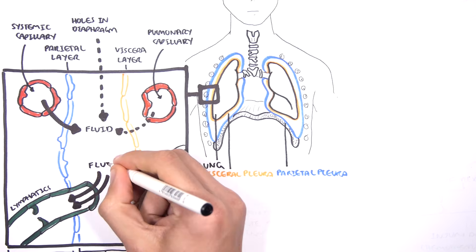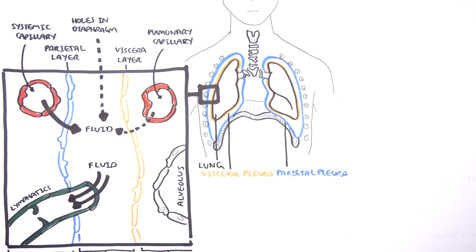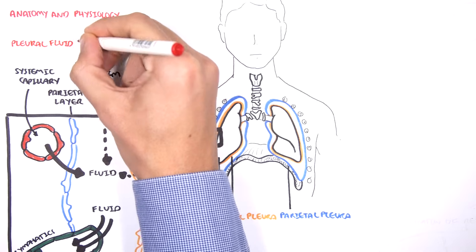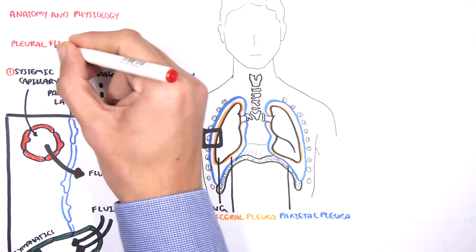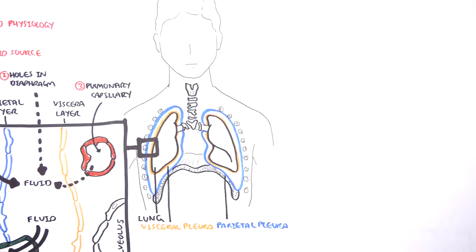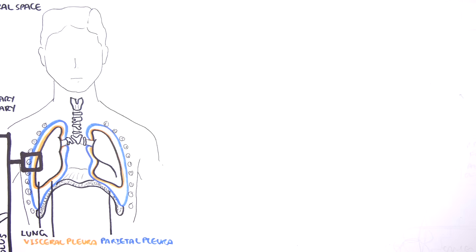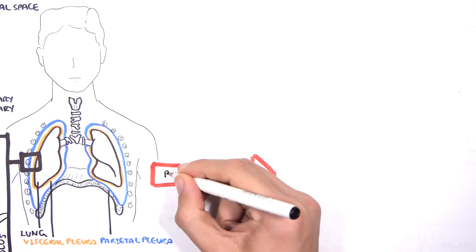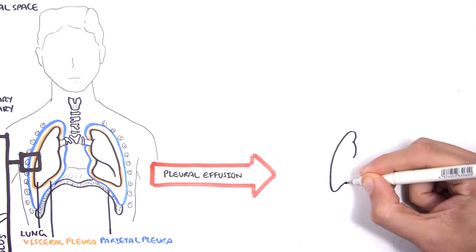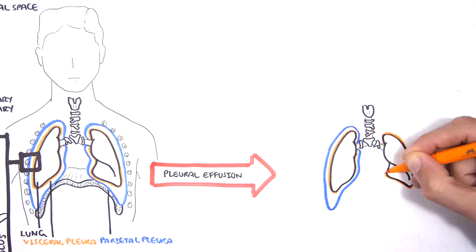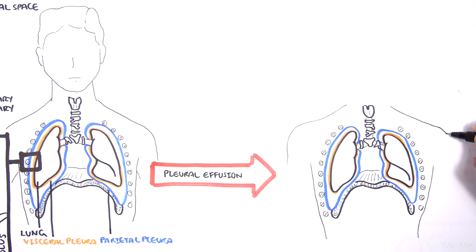The lymphatics drain this pleural fluid and help maintain the normal pressure in the pleural space. Pleural effusions is essentially where you have accumulation of pleural fluid in the pleural space. When this happens, you get restriction of lung expansion, and so you get shortness of breath.